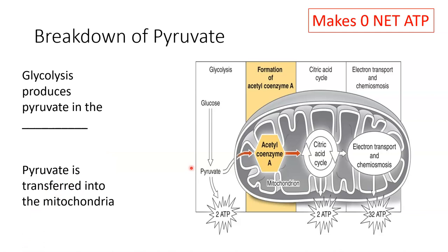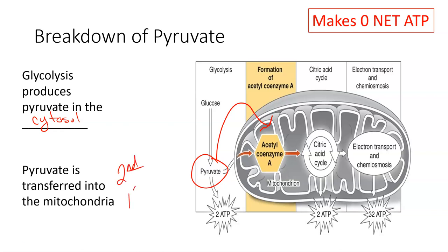Glycolysis, the first step of cellular respiration, is actually produced in the cytosol. So the pyruvate we produced in the first step is also found right now in the cytosol, because that's where we made it. That pyruvate within the cytosol then transfers into the mitochondria. So this second step of cellular respiration is actually the first step that occurs in the mitochondria — the powerhouse of the cell. We don't start working inside the mitochondria until we get to that second step.